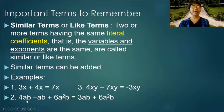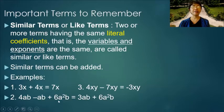Example 2: 4ab minus ab plus 6a squared b is equal to 3ab plus 6a squared b. The first two terms were added, but we cannot add the third term because there is a different exponent for the variable a.